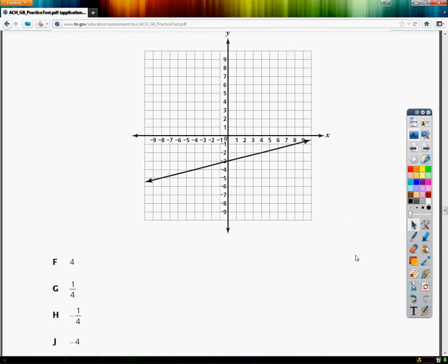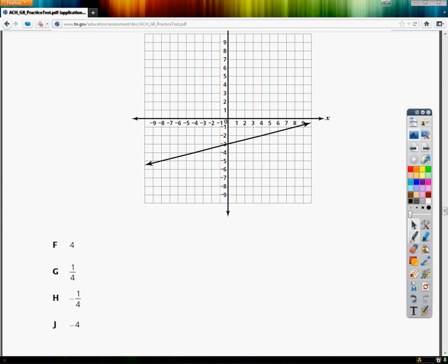Which value appears to be the slope of the line graphed below? Now, as you can see in the graph, the line itself is going up as I go left to right. Anytime I'm going up left to right, I have a positive slope.